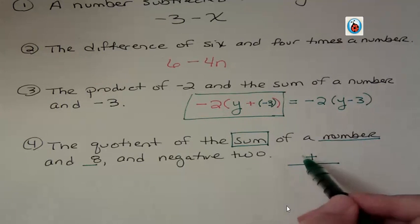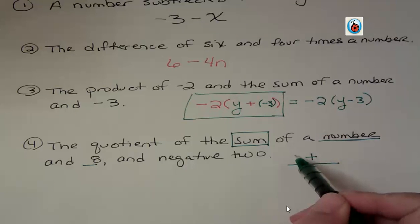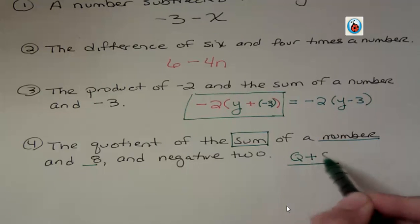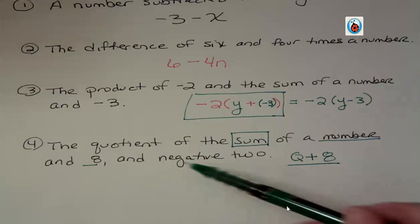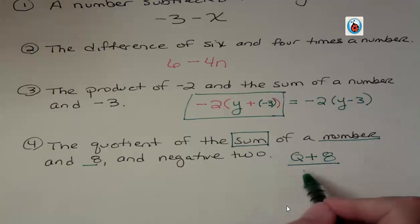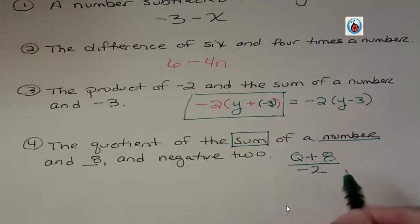So that looks like whatever you want it to be, q plus eight. That's a sum of a number and eight. Now remember, it's a quotient. So that's only the numerator. What's the other part? The other part is negative two. So in the denominator, we have negative two.